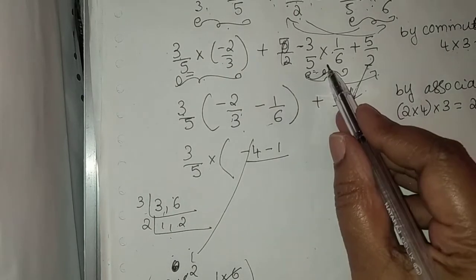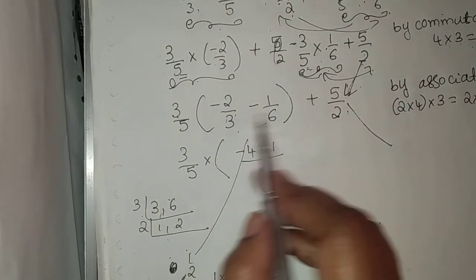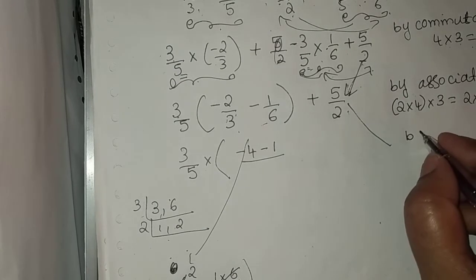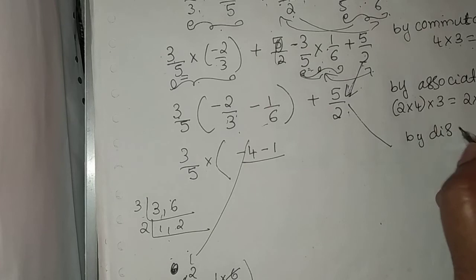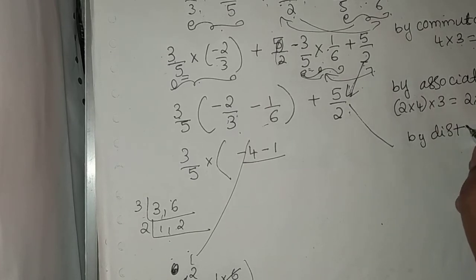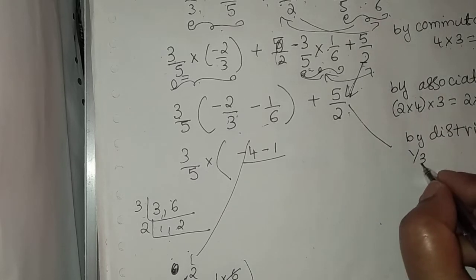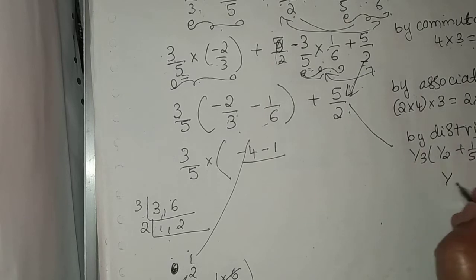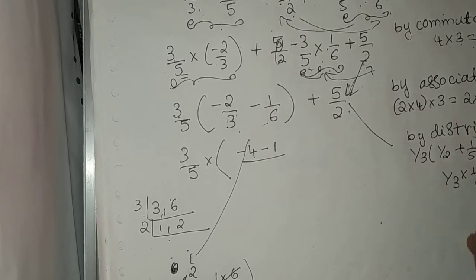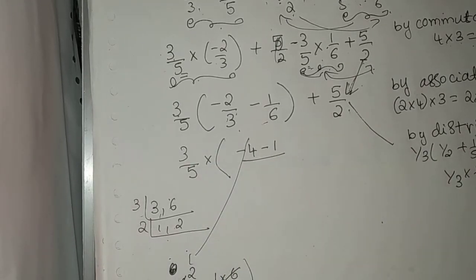Interchange is done by associativity. Next, for taking 3/5 common from the bracket, the property used is the distributive property. Distributive property means distributing — expanding and writing. For example, 1/3 × (1/2 + 1/5) can be expanded as 1/3 × 1/2 + 1/3 × 1/5. So this is the distributive property we used here.